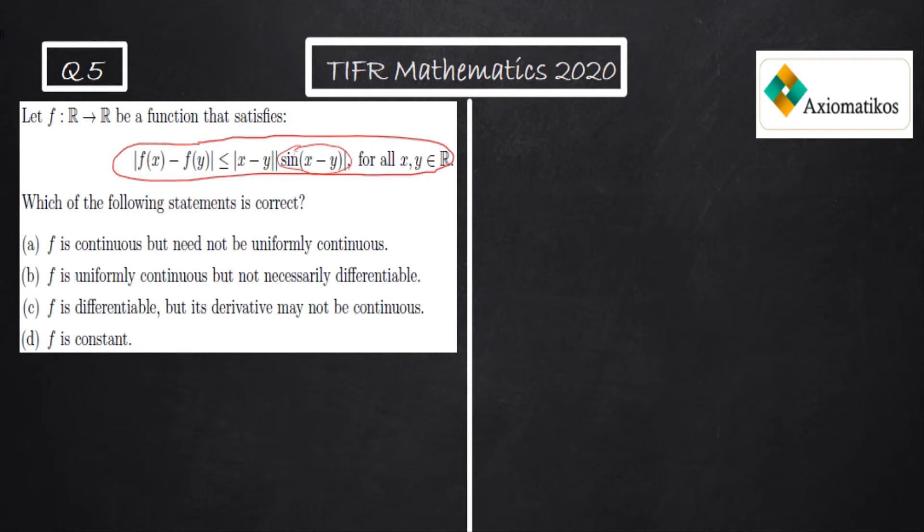We know that if this limit, limit x approaches a of [f(x) - f(a)] / (x - a), exists, then the function will be differentiable at x equal to a and f' exists. f' at a will be limit x approaches a of [f(x) - f(a)] / (x - a). So let us try whether we can find this limit or not.